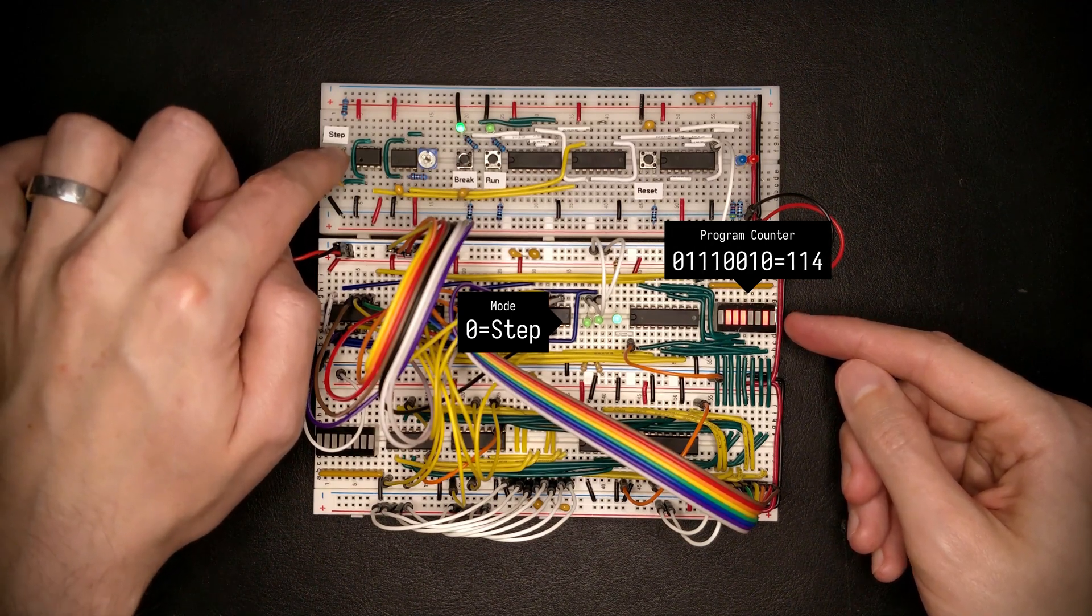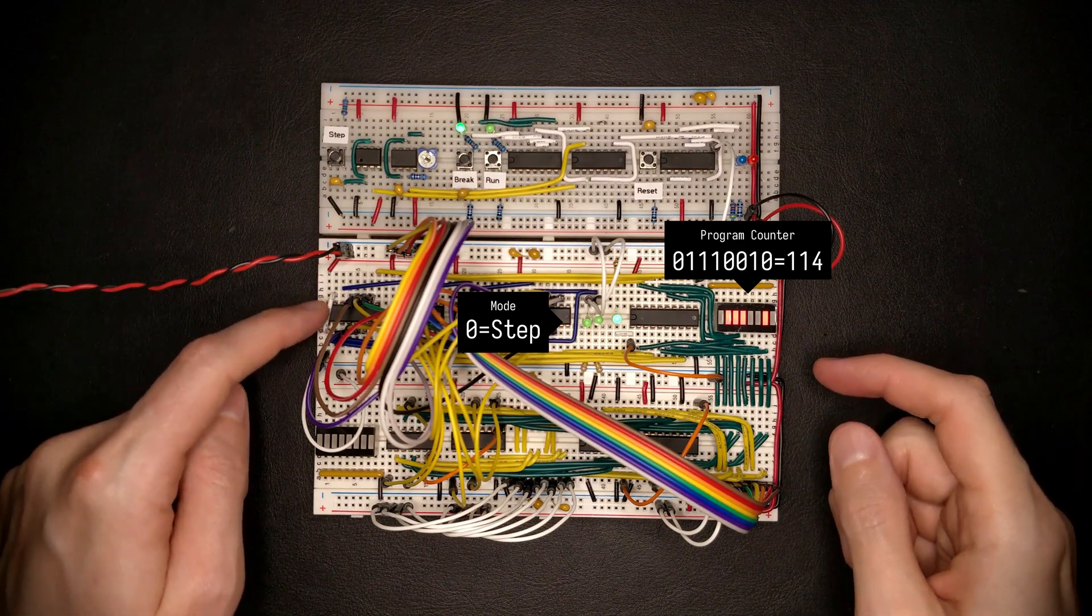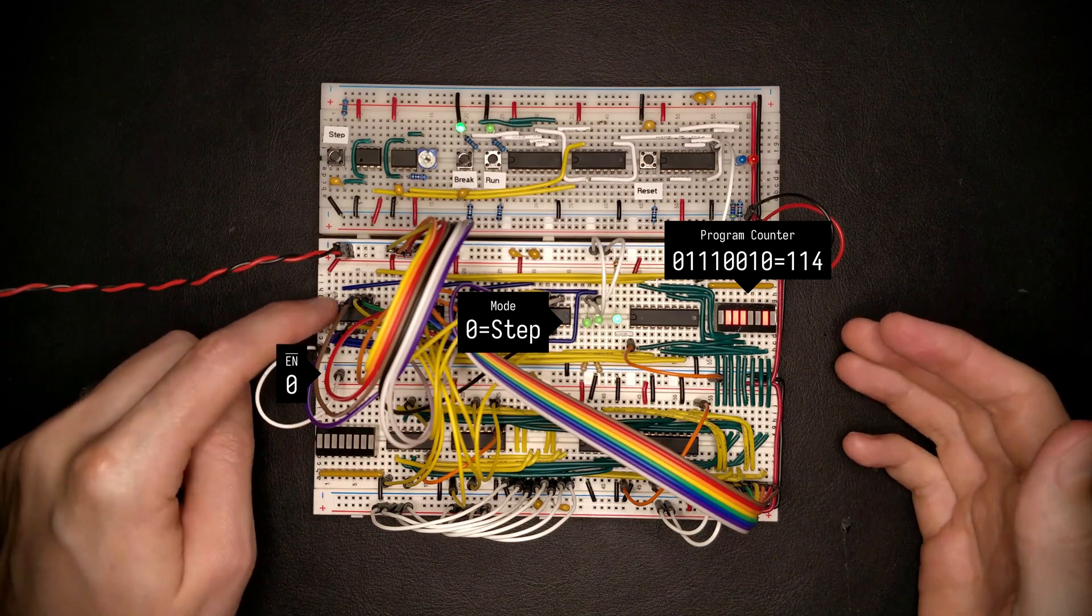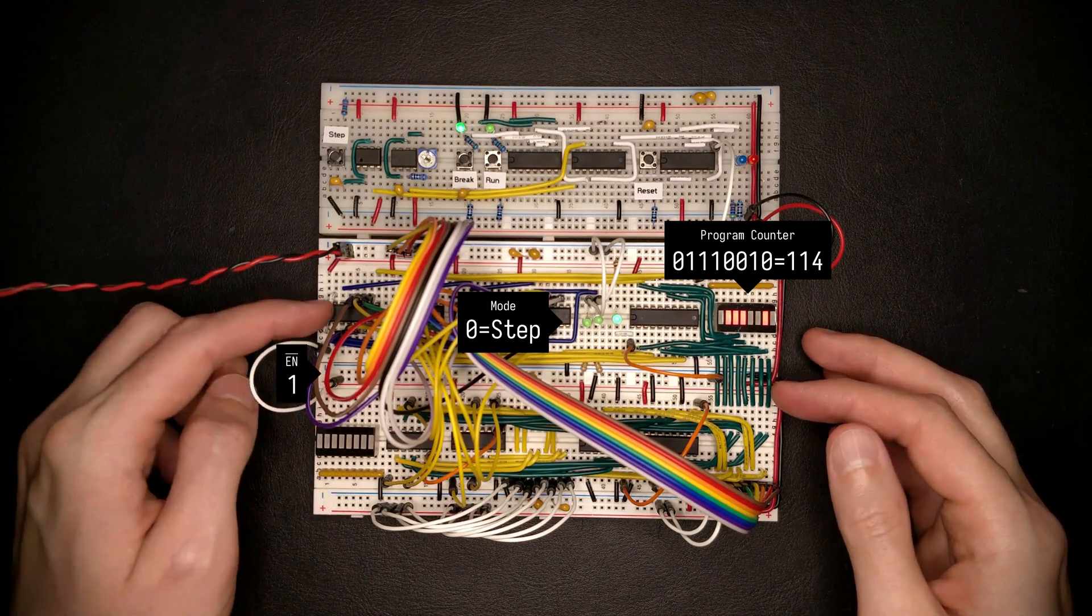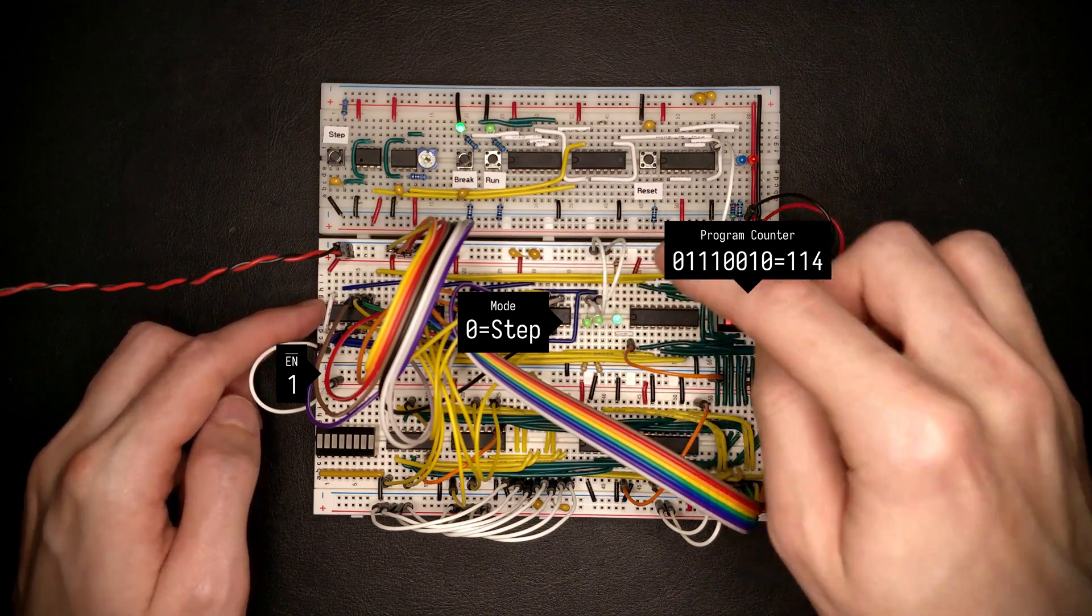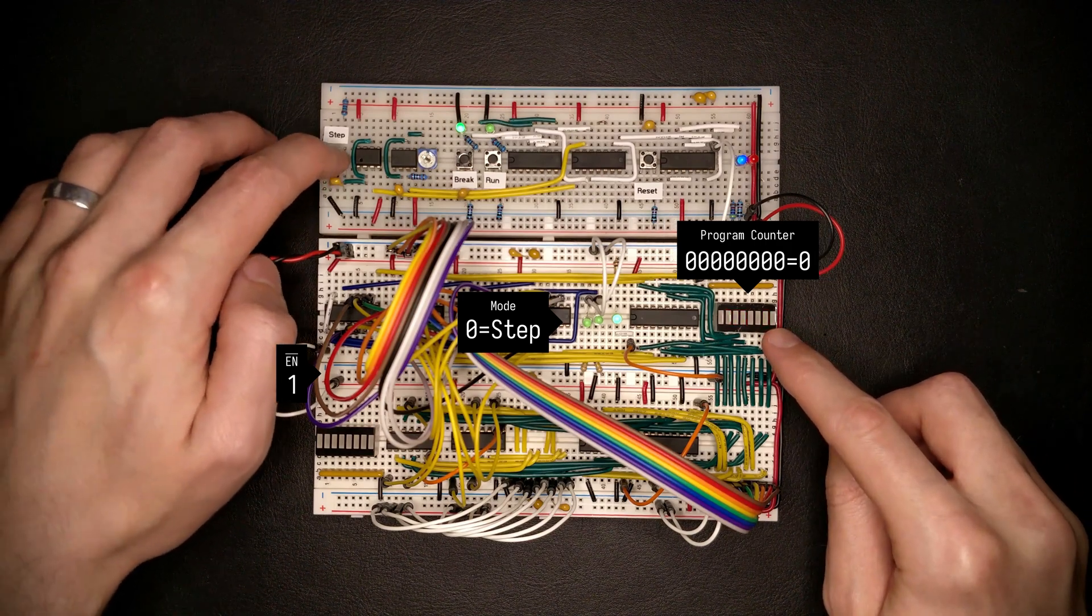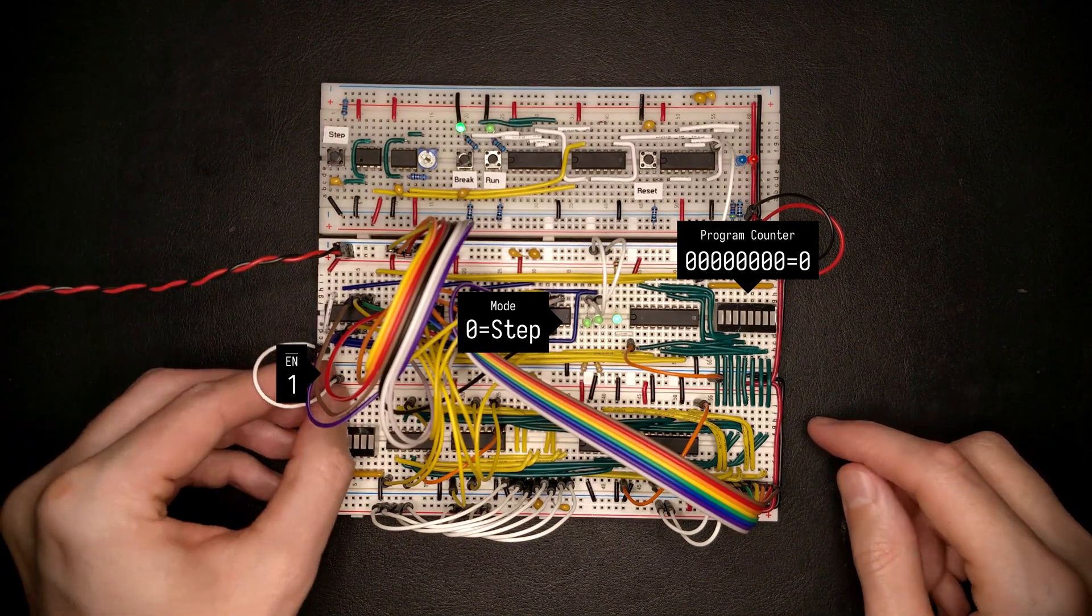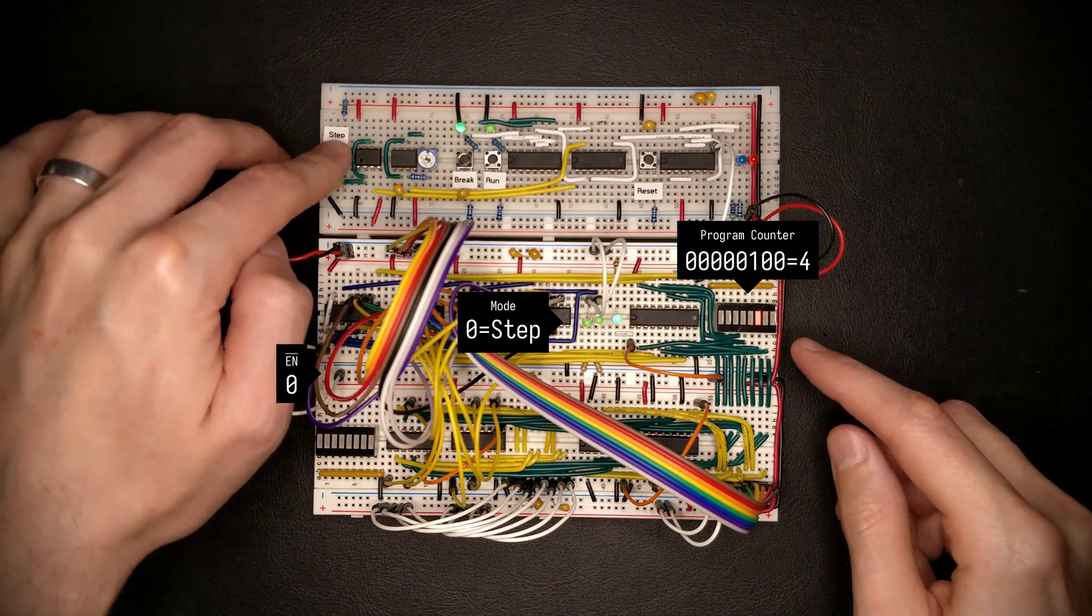Now one of the features of the multiplexer is that they have this enable signal which is currently tied low which is because it's active low enables the multiplexers. But if we tie that high their outputs change to all zeros, so regardless of what we've selected here we should be able to just hit the step button and this should clear back to zero. And it sure does. And when we pull it back low again it will just continue normal operation.